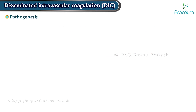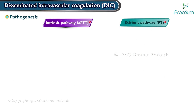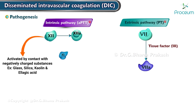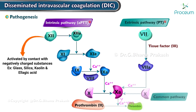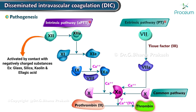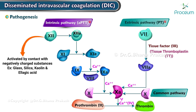Pathogenesis. Normally, clotting is initiated by either of the two pathways, both of which lead to formation of thrombin. The extrinsic pathway is triggered by the release of tissue factor, called tissue thromboplastin.